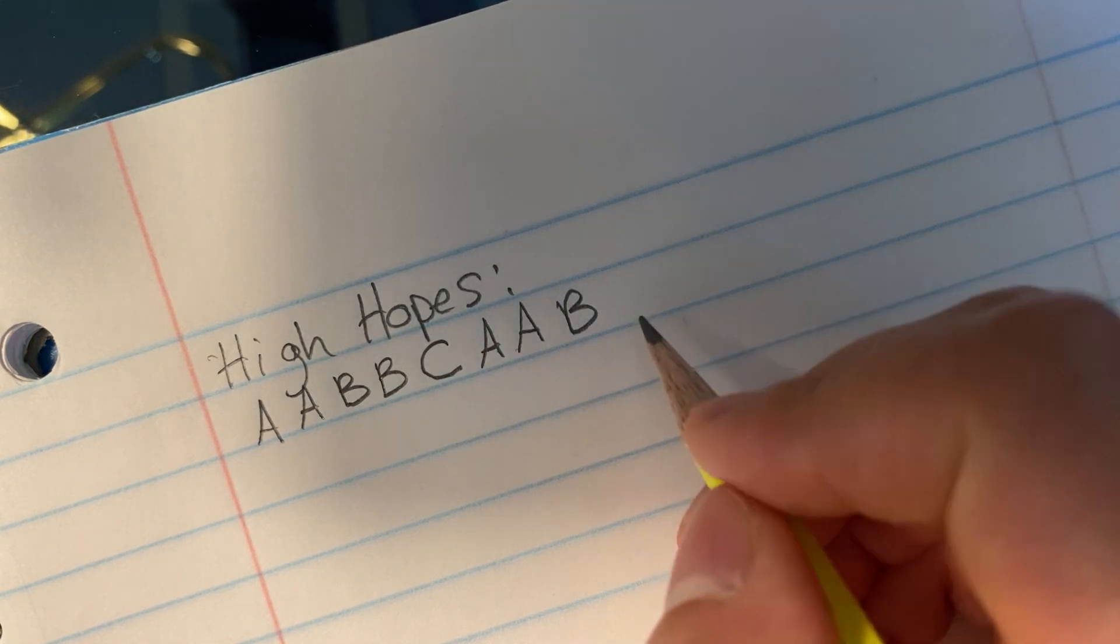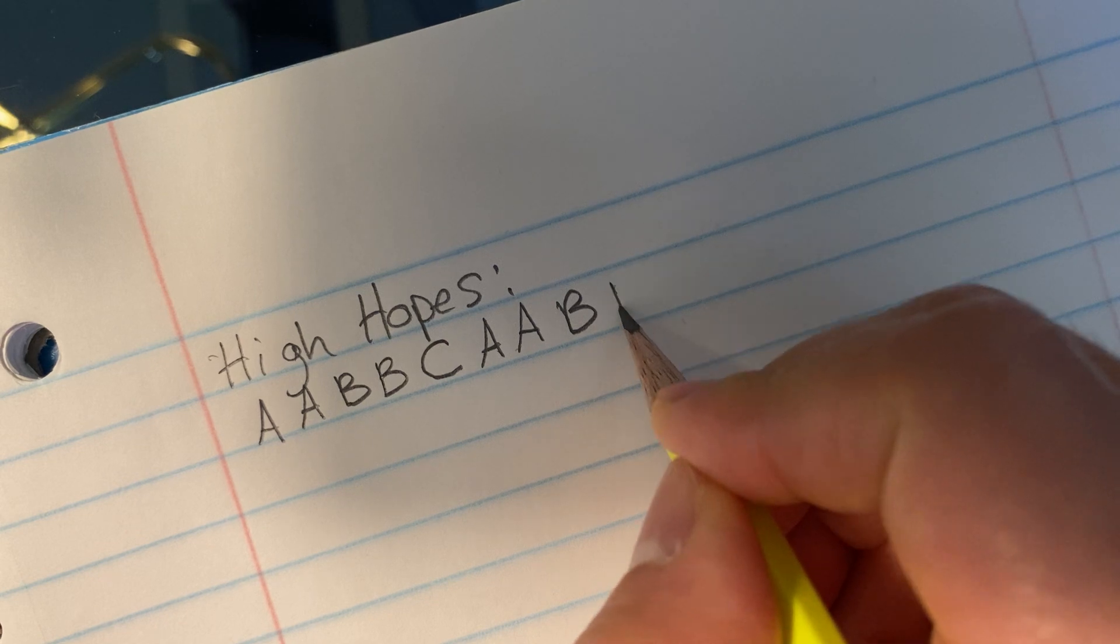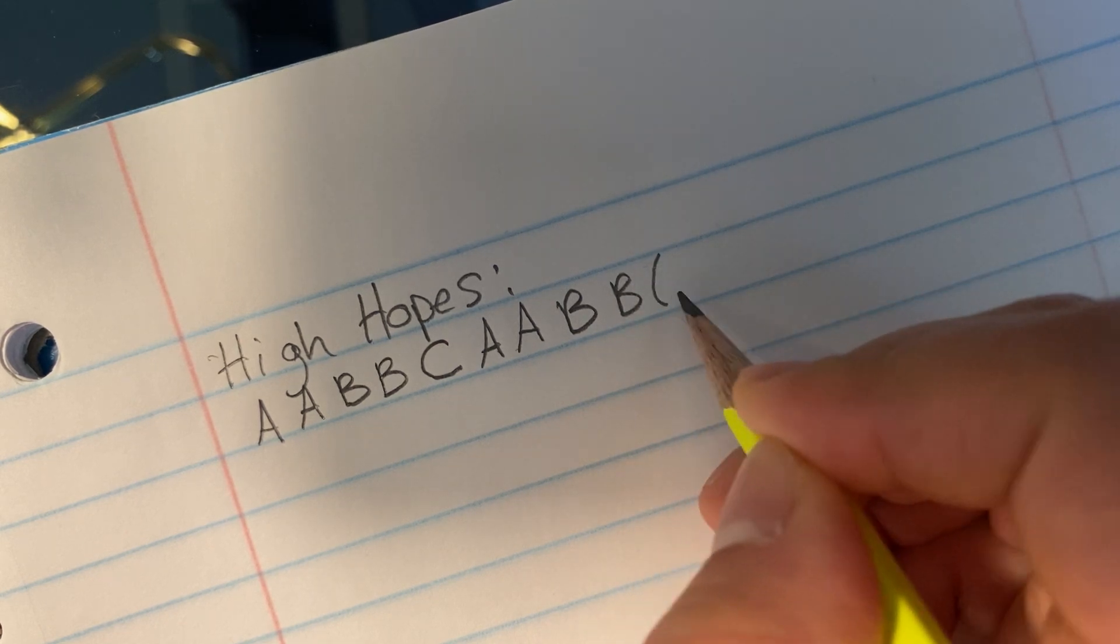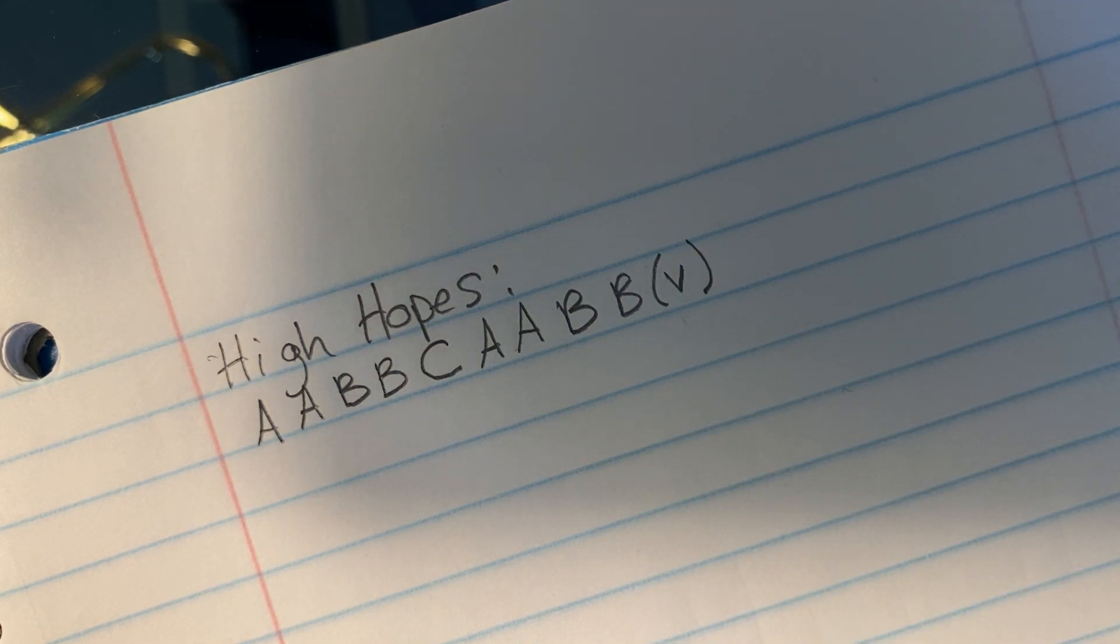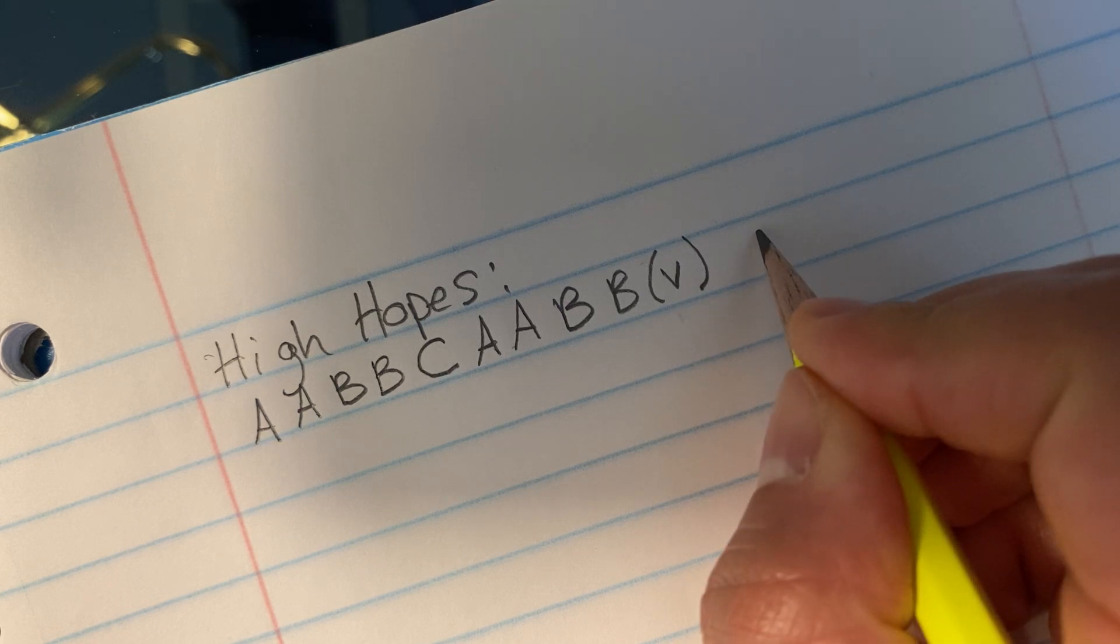Now it changes, this is a variation, so I'm going to put a V with a V so I know that's a variation. And now here's our pre-chorus.